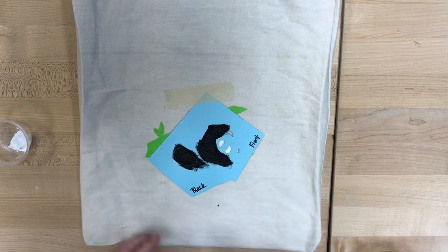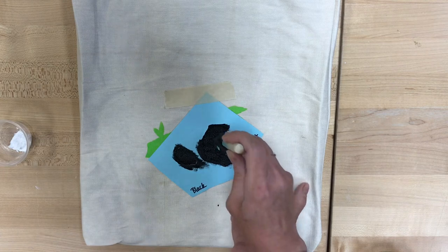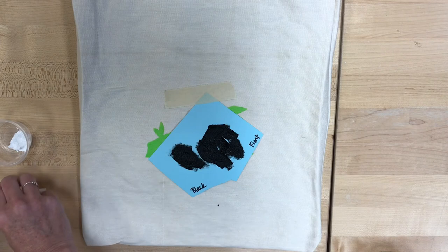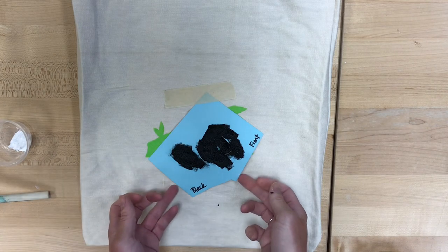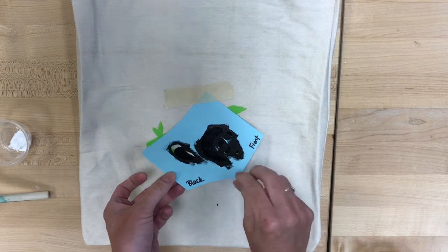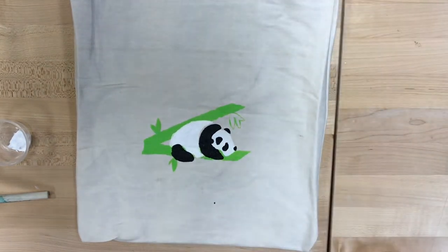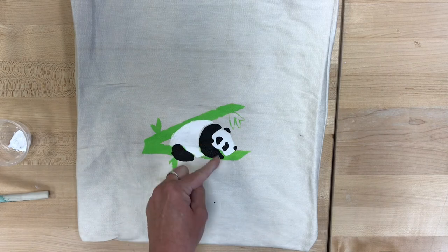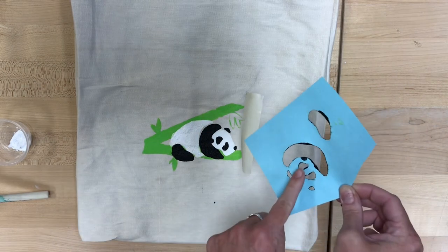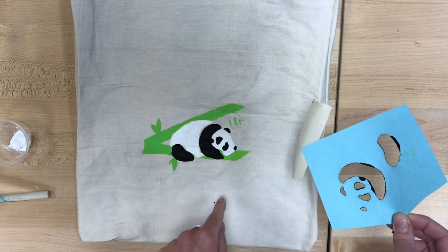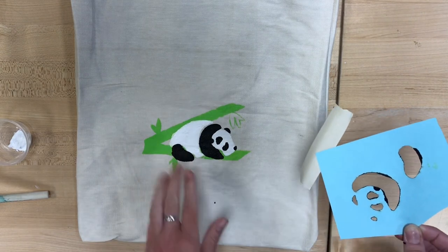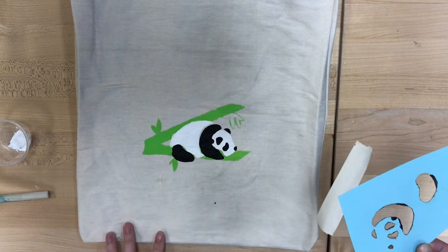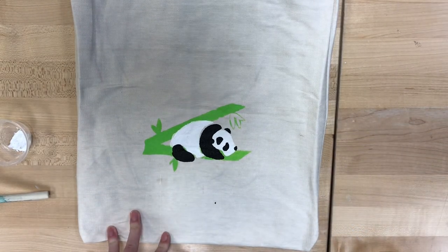The nice thing about the black is that it's such a dark color that you'll probably only need one coat. So we are super close to the end. All right, you're going to let that one dry as well. And then when you're finished, you will have this awesome panda on your bag. You can see where the black kind of squelched through to the underside just a little bit, which I don't think ruins it. But if you use more tape, you probably will not have that problem.